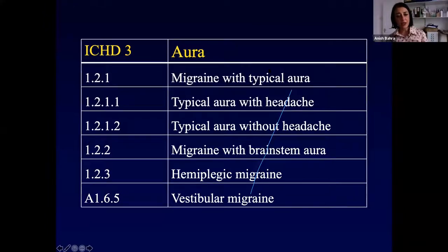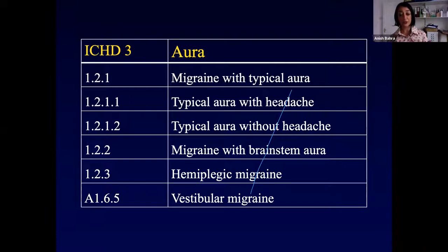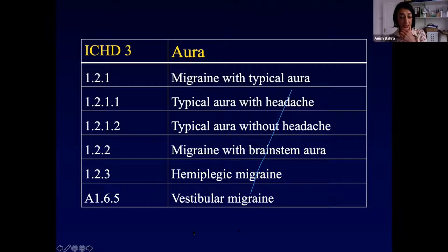You have different sorts of typical aura. You can get aura without headache, aura with different types of headache, brainstem aura, hemiplegic migraine, and I also want to talk about vestibular migraine.